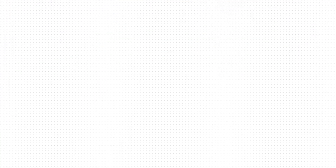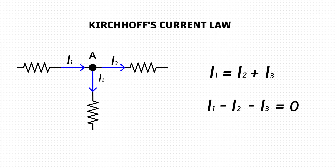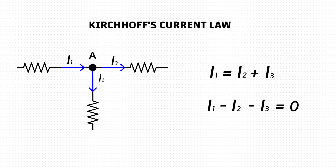Now let's move on to Kirchhoff's current law. This law basically states that the sum of all the currents flowing into a node must be equal to all the currents flowing out of the same node. In other words, all the currents acting in a single node must be equal to zero.